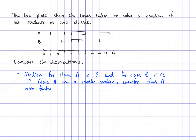In a different case — if we're thinking about how far you can throw — then a larger distance would be better, so we'd say the larger distance was better. In this case, we're saying class A were faster. That's point number one.